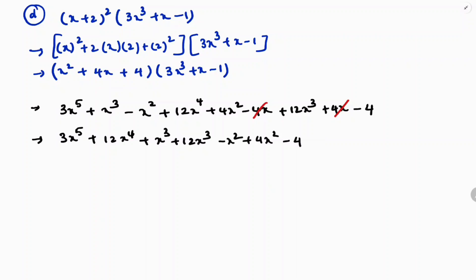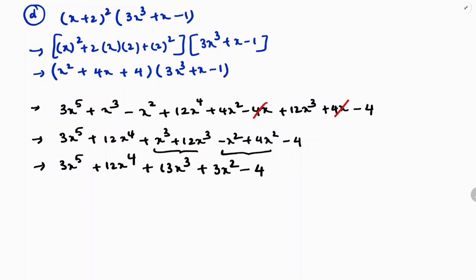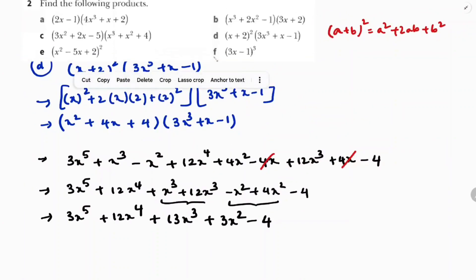Now writing in descending order and simplifying: 3x⁵, plus 12x⁴, then x³ plus 12x³ minus 4x³ — wait, x³ plus 12x³ is 13x³, minus x² plus 4x² is 3x², minus 4. So the final answer is: 3x⁵ + 12x⁴ + 13x³ + 3x² - 4. First expand using (a+b)² then multiply trinomial times trinomial.